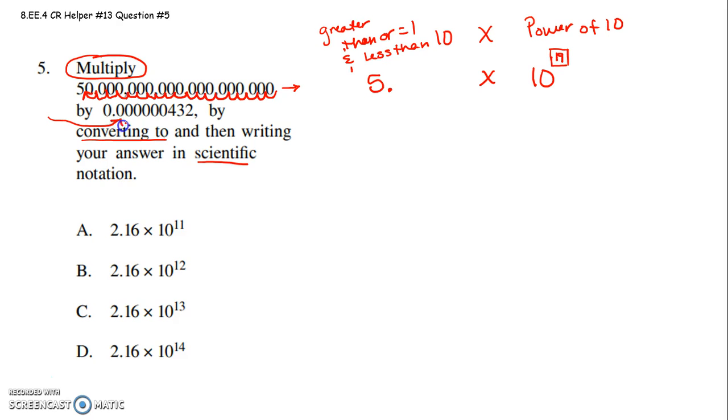This one is a teeny tiny number. So it will be 4.32 because that first number has to be greater than or equal to 1 but less than 10. Now because it's a teeny tiny number, I know it's going to be times 10 to a negative exponent. And what will that negative exponent be? 1, 2, 3, 4, 5, 6, 7.